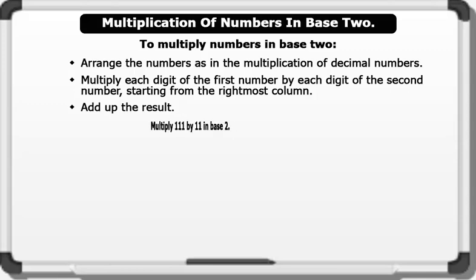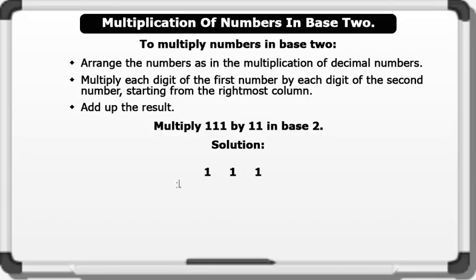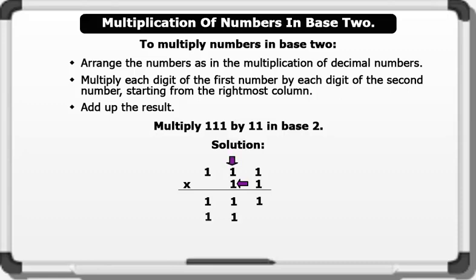Let's see an example. Multiply 1 1 1 by 1 1 in base 2. Solution: 1 1 1 times 1 1. Using the first digit of the second number from the right: 1 times 1 equals 1, 1 times 1 equals 1, 1 times 1 equals 1. Now using the second digit: 1 times 1 equals 1, 1 times 1 equals 1, 1 times 1 equals 1.